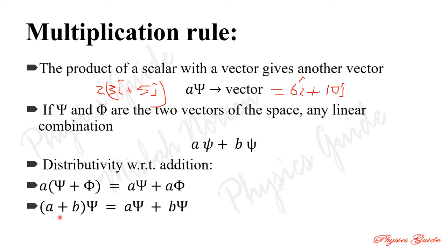The second distributive property: if we add two scalars and multiply by a vector, the result equals the first scalar times the vector plus the second scalar times the vector. That is, (a + b)·psi equals a·psi plus b·psi. This is distributivity with respect to addition for the multiplication rule.